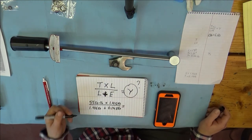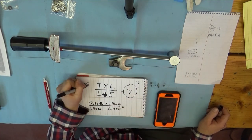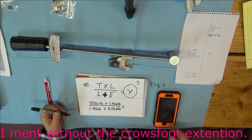That will calculate the new torque. So without the extension, it's 55 foot pounds. Let's see how much of a difference it is. So I need a calculator.